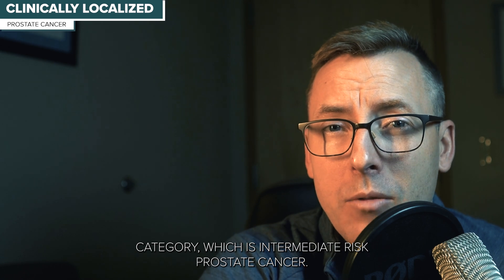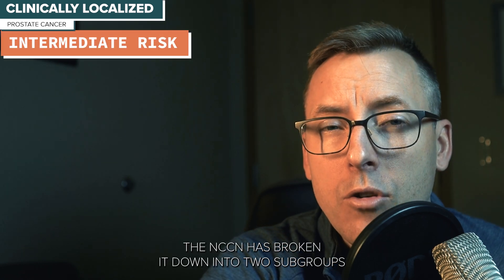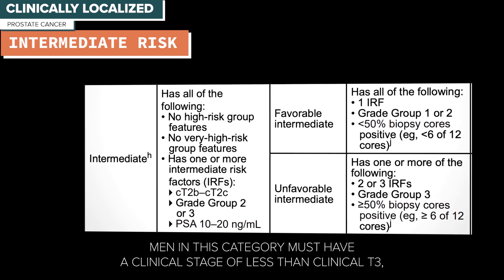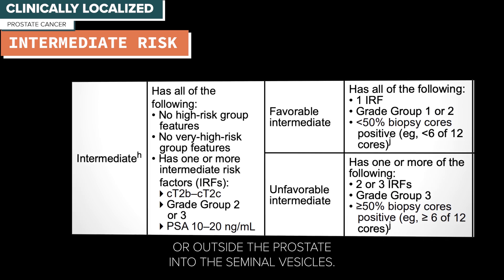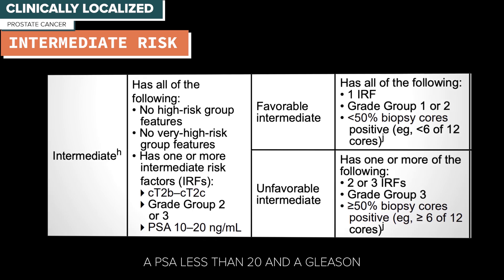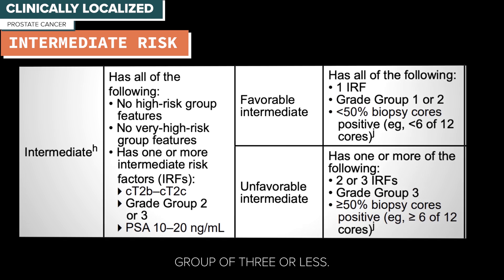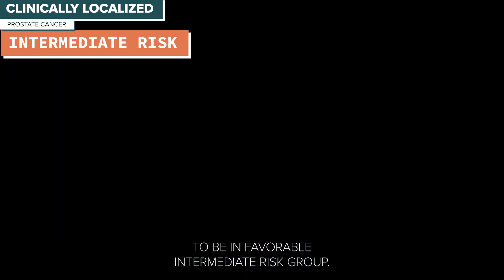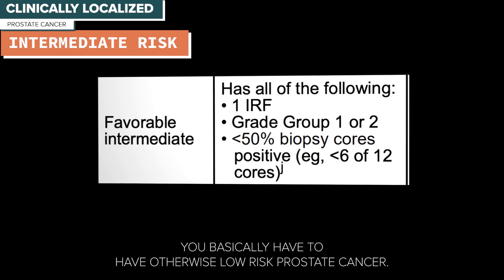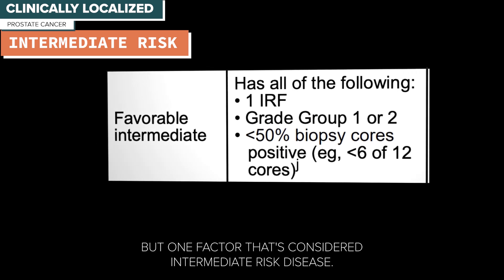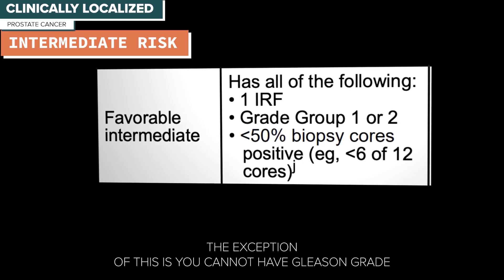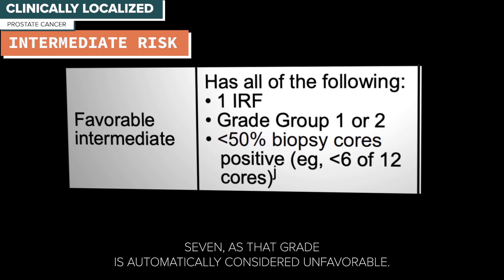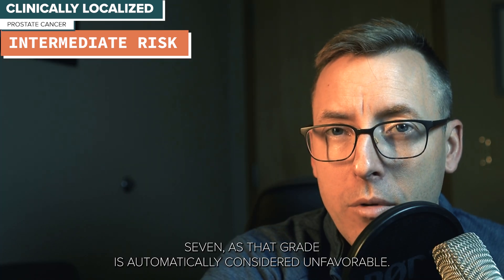For intermediate risk prostate cancer, the NCCN has broken it into two subgroups: favorable and unfavorable. Men in this category must have a clinical stage less than T3, a PSA less than 20, and a Gleason grade group of 3 or less. To be in favorable intermediate risk, you essentially have otherwise low risk prostate cancer but one factor that's considered intermediate risk. The exception is that grade group 3 (4+3=7) automatically makes you unfavorable intermediate risk. If you have two or more intermediate risk factors, you also become unfavorable intermediate risk.